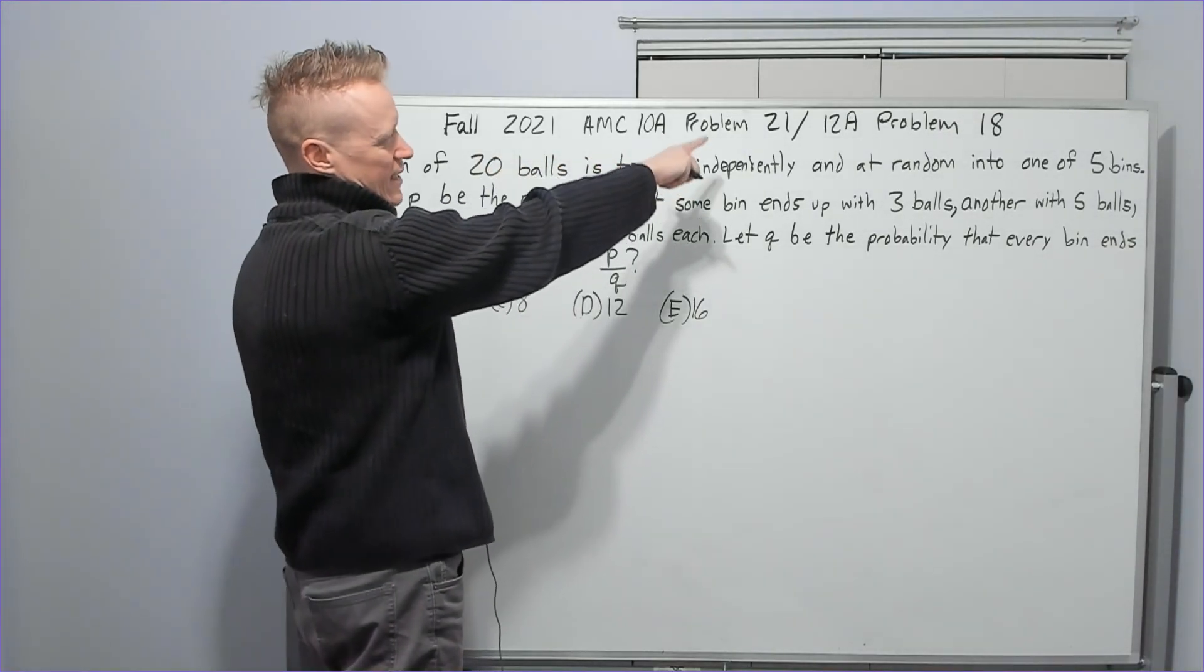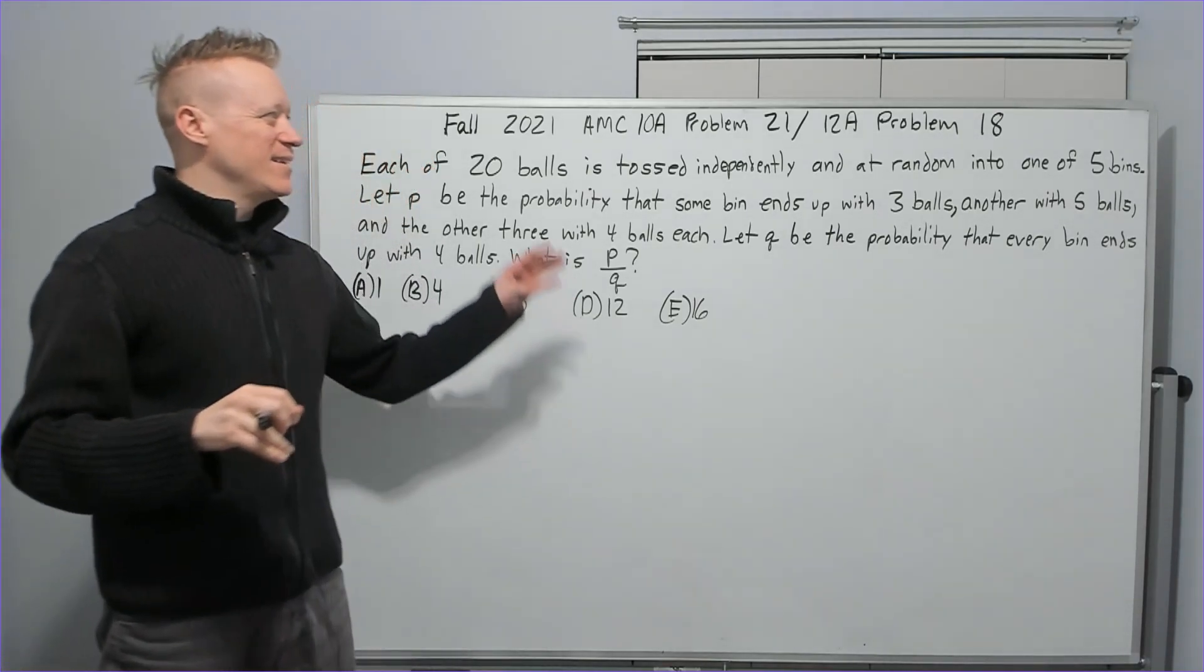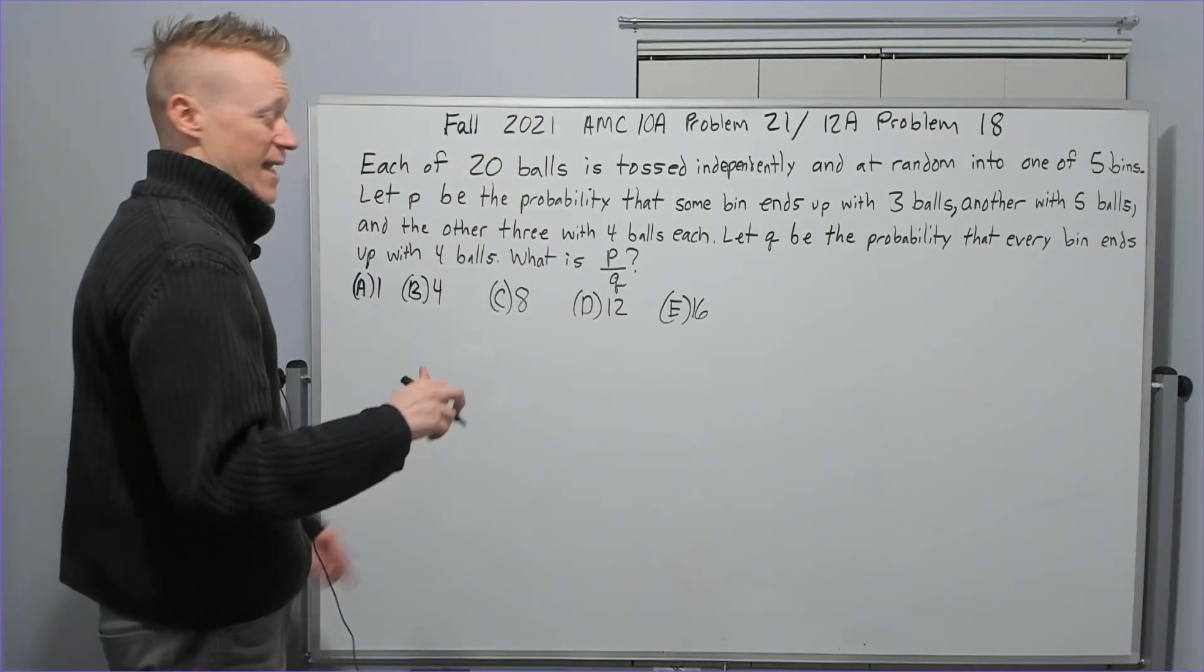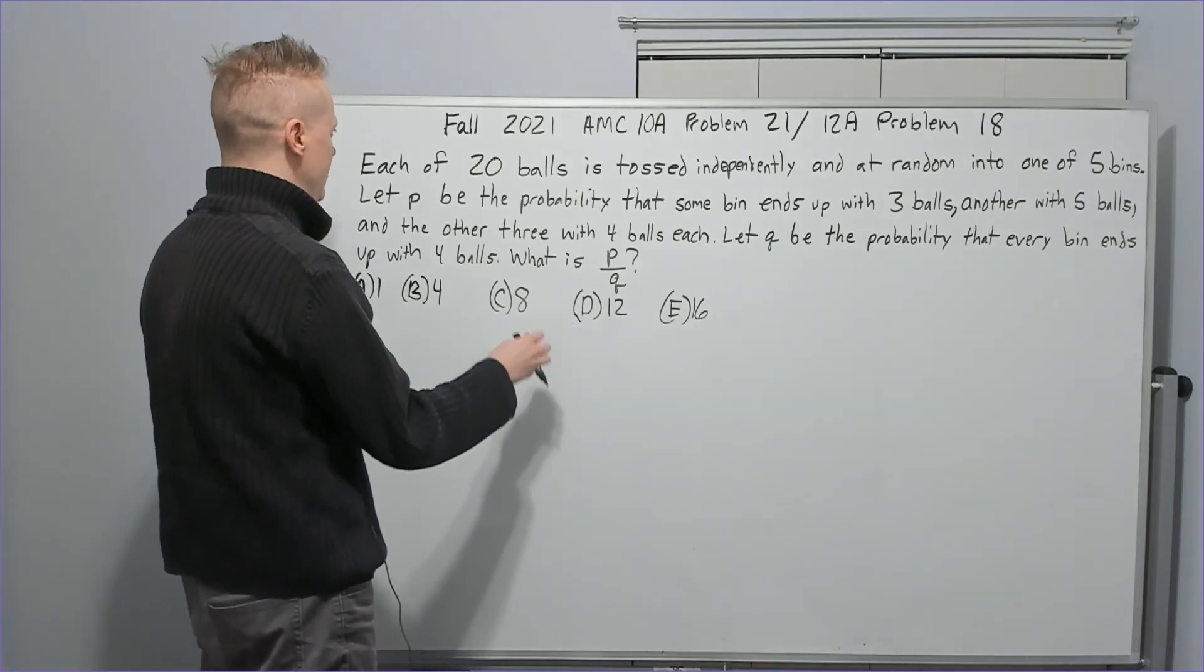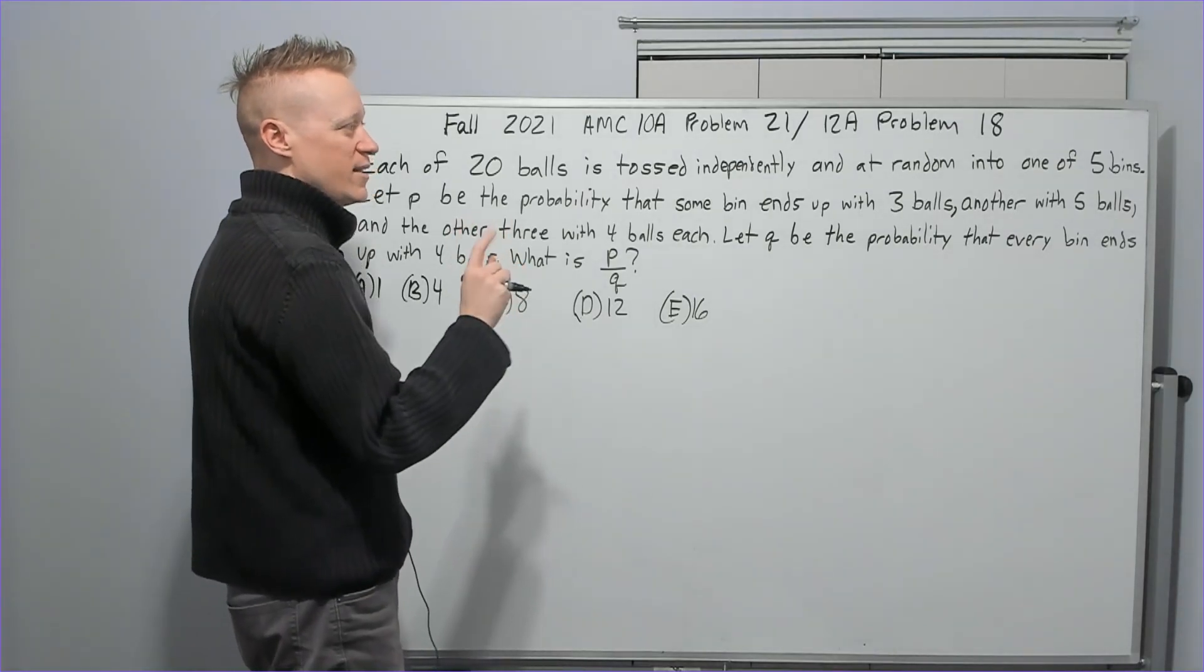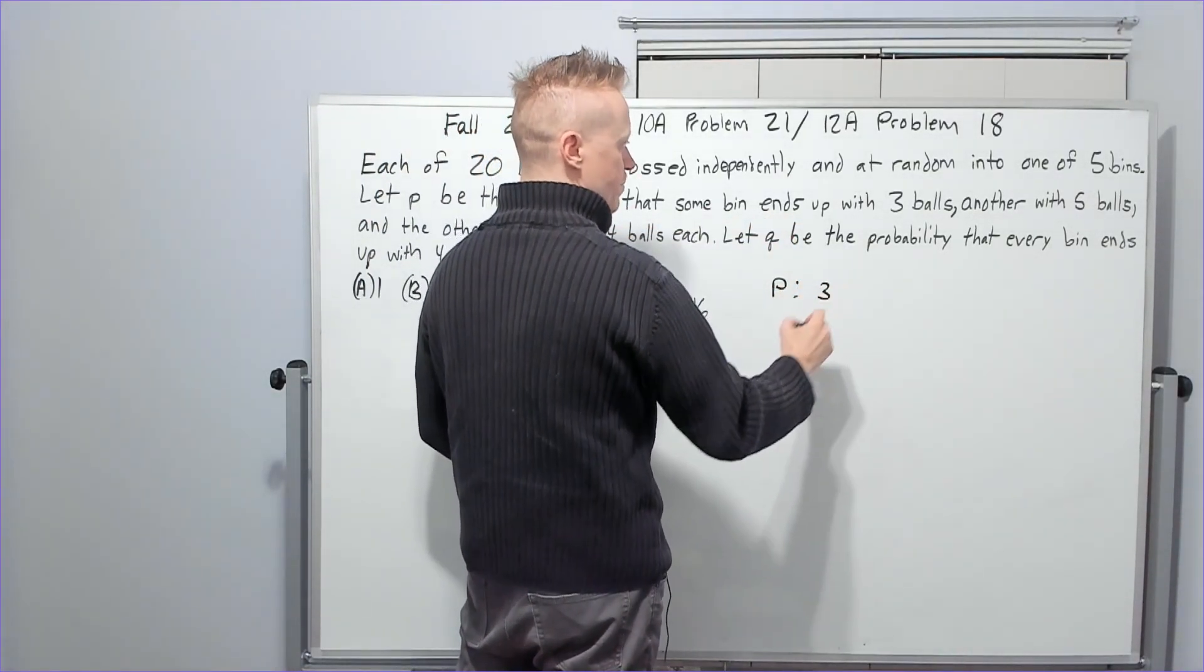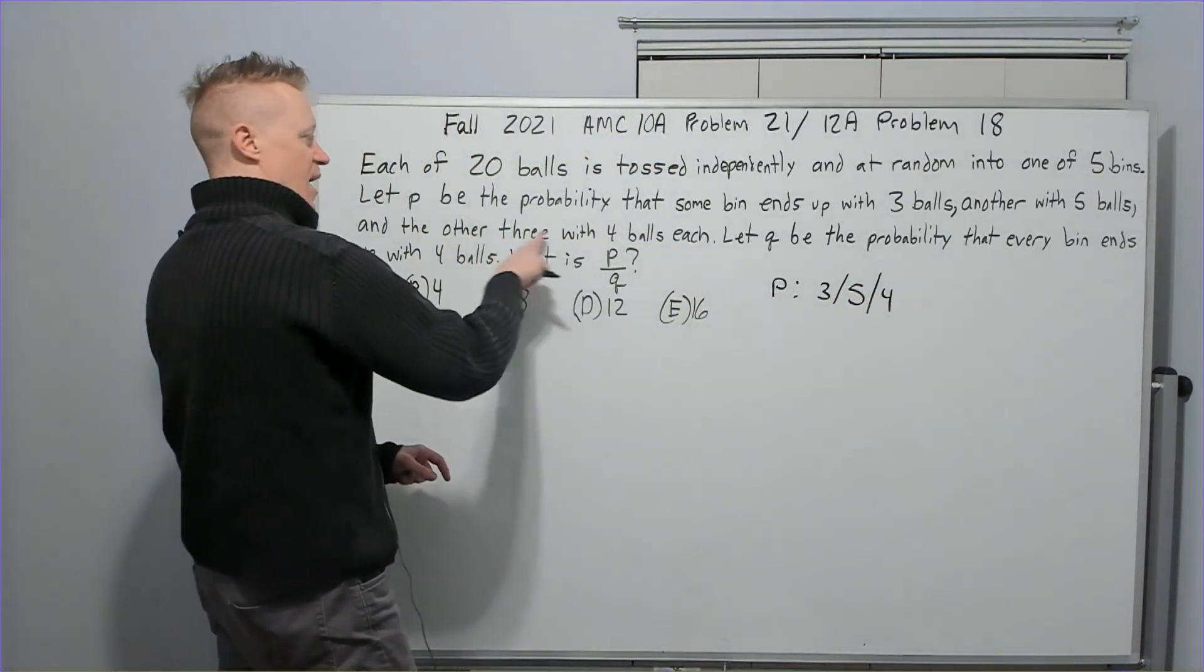Fall 2021 AMC 10A Problem 21, 12A Problem 18. I did spend a little bit of time in the beginning. I thought I could use stars and bars. And in fact, you may be able to, and I failed to execute it well. So I had to abandon that path and try a different one, which ended up providing one of the actual answers and ended up being correct.